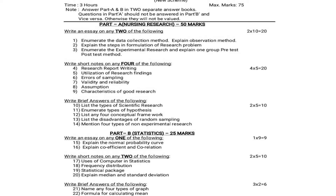In the essay section, they will give 3 essays; out of those, you have to answer only 2. 2 into 10 equals 20 marks. Question 1: Enumerate the data collection methods and explain the observation method. Question 2: Explain the steps in formulation of a research problem. Question 3: Enumerate the experimental research designs and explain the one-group pre-test post-test method. Answer any 2 for 20 marks.